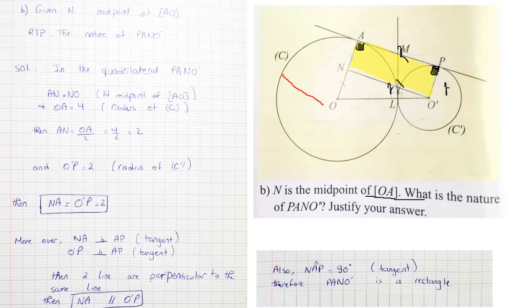We also have 90-degree angles at A and at P, because AM is tangent at A and the tangent is perpendicular to the radius, giving 90 degrees. So NA is perpendicular to AP, and O'P is also perpendicular to AP. Two lines perpendicular to the same straight line are parallel. So the quadrilateral has one pair of equal and parallel sides plus two right angles — therefore its nature is a rectangle.